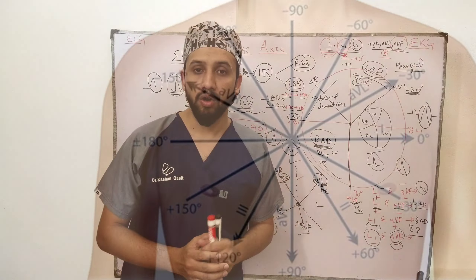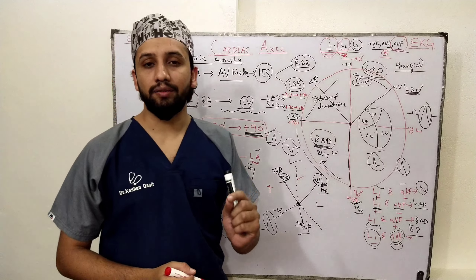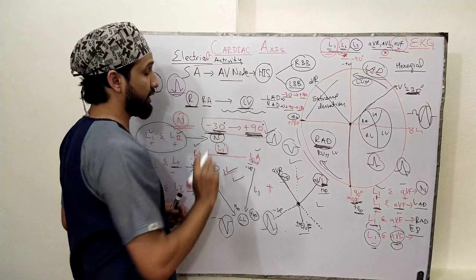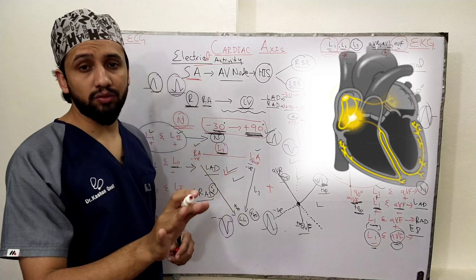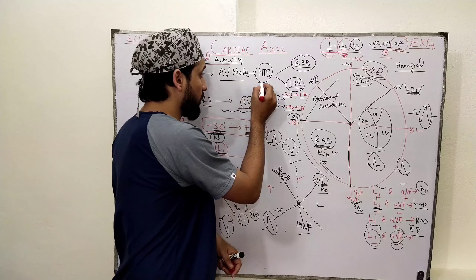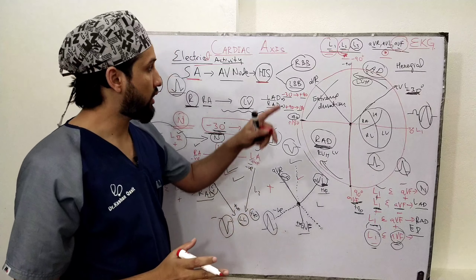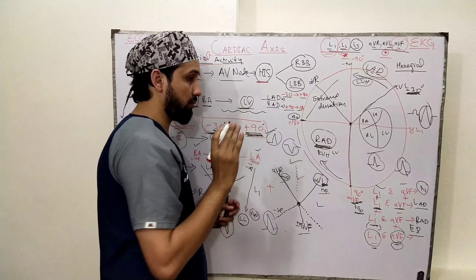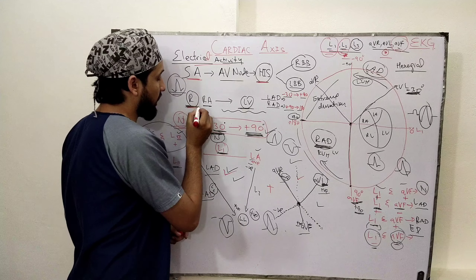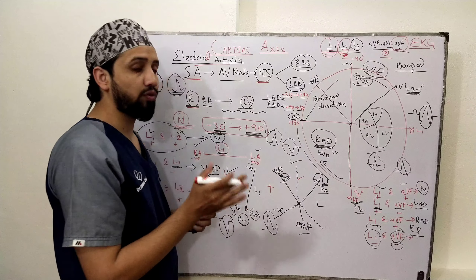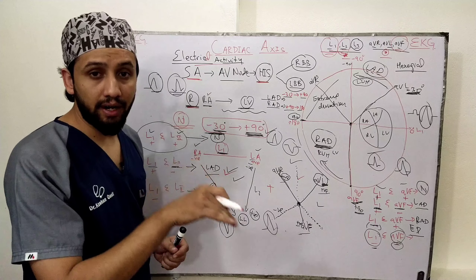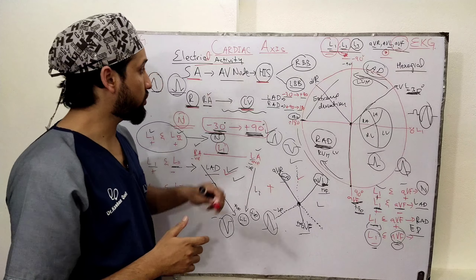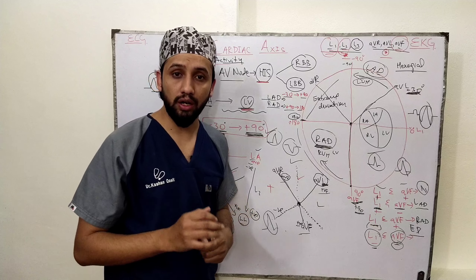Before discussing cardiac axis determination, we will look at some basics of the electrical activity of the heart — how it is generated and travels throughout the heart. Basically, the electrical activity is generated in the SA node, travels towards the AV node, then to the bundle of His, and from there the right bundle branch and left bundle branch originate. Overall, the electrical activity travels from the right side of the heart towards the left side — from the right atrium towards the left ventricle.